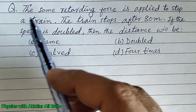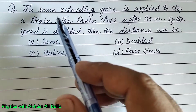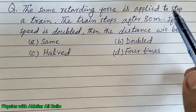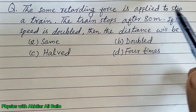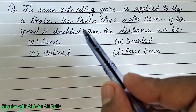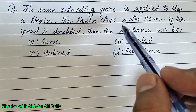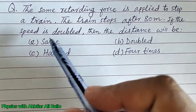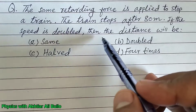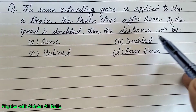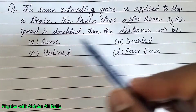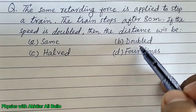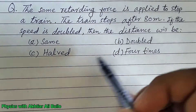The question is: the same retarding force is applied to stop a train. The train stops after 80 meters. If the speed is doubled, then the distance will be: A) same, B) doubled, C) halved, D) four times.